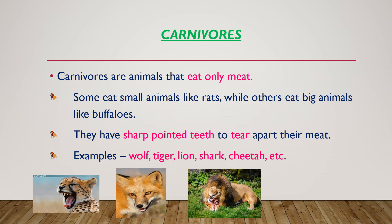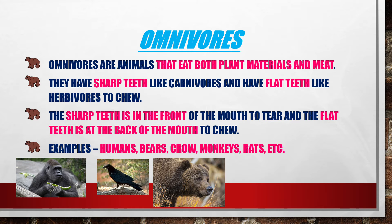What are omnivores? Omnivores are animals that eat both plant materials and meat. They have sharp teeth like carnivores and flat teeth like herbivores. The sharp teeth are at the front of the mouth to tear, and the flat teeth are at the back of the mouth to chew.